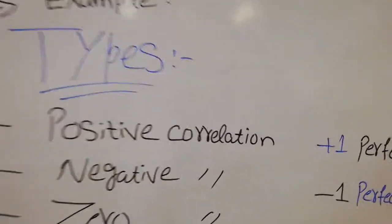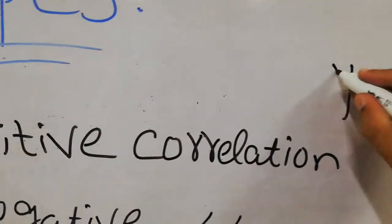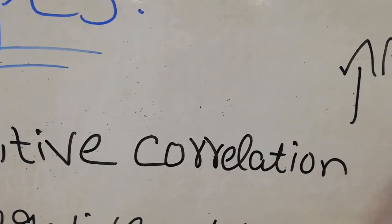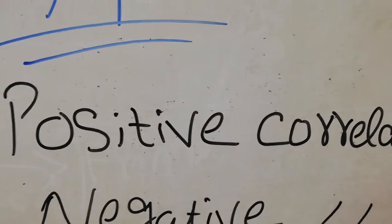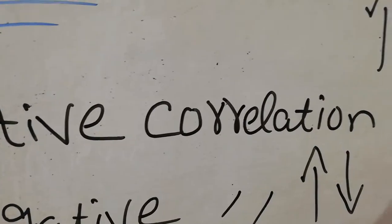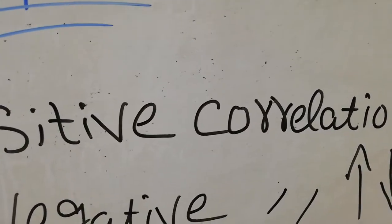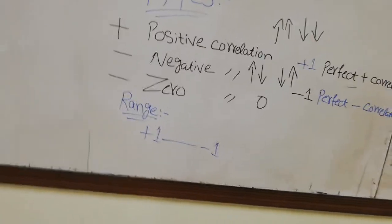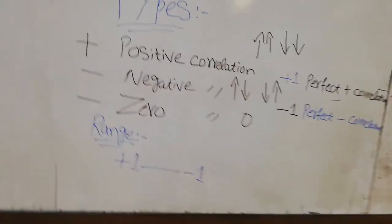So in positive correlation, both variables move in the same direction — either both upward or both downward. In negative correlation, one is upward and one is downward. When one goes up and the other goes down, we call the answer zero, meaning zero correlation between the two variables.